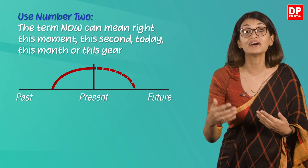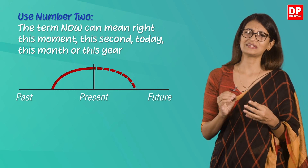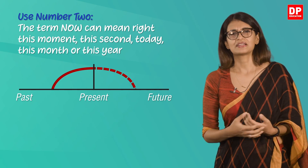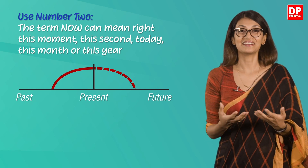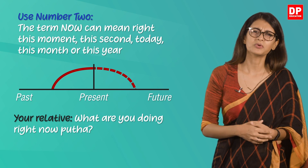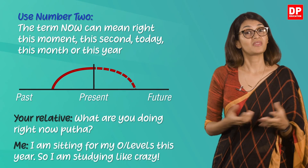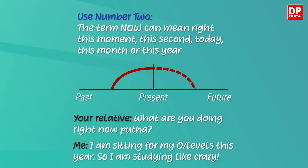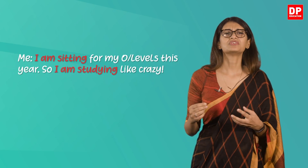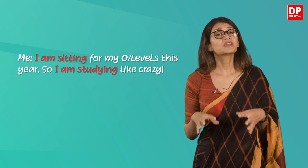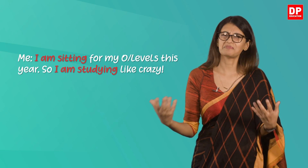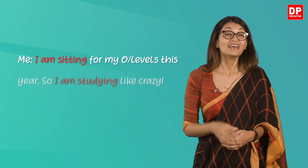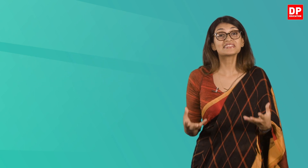We use the present continuous to indicate that we are in the process of doing a longer action, though we might not be doing it at this exact moment. Suppose a relative comes to your place and asks, 'What are you doing right now?' You could reply, 'I'm sitting for my O-levels this year, so I'm studying like crazy.' Notice how the present continuous is used here — it doesn't mean you are doing your O-levels right now; it could mean in the near future, end of the month, in two weeks, or even in a year.